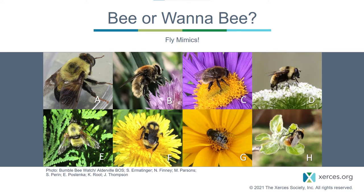So, at least one of you thought that every single animal on this page was a bee. In fact, there's only one bee on this whole page. There was a tie between A and F as the two animals you all thought most likely to be a bee, and half of those people were right — it was F. F is actually the only animal on this page that is a bee. The rest of those animals are all flies.